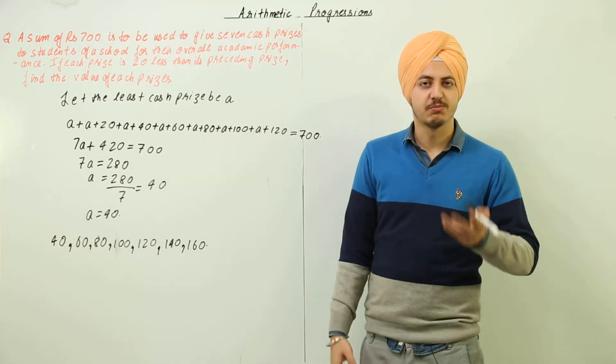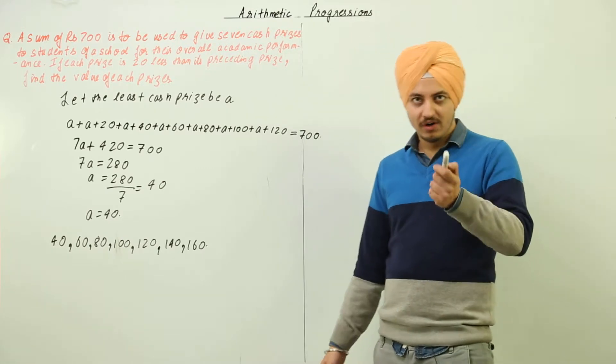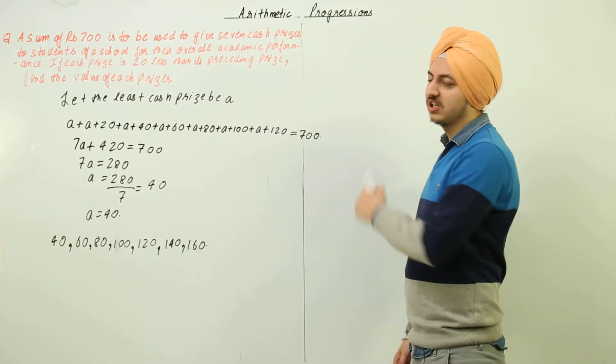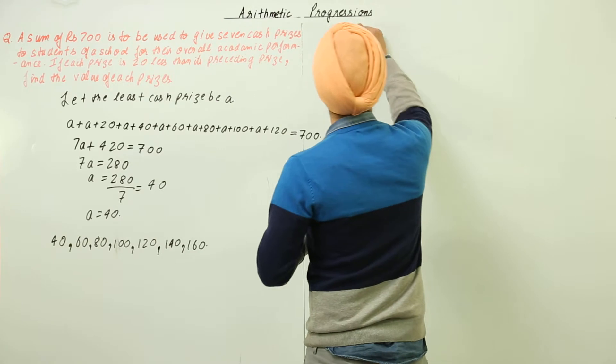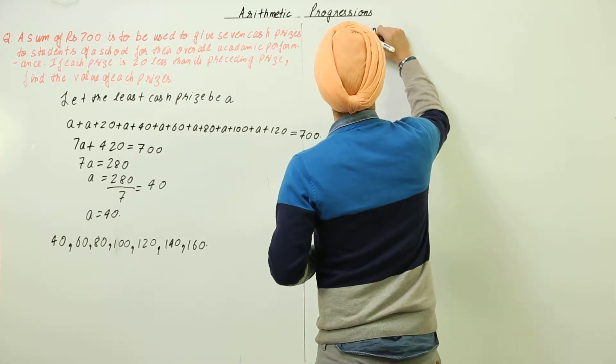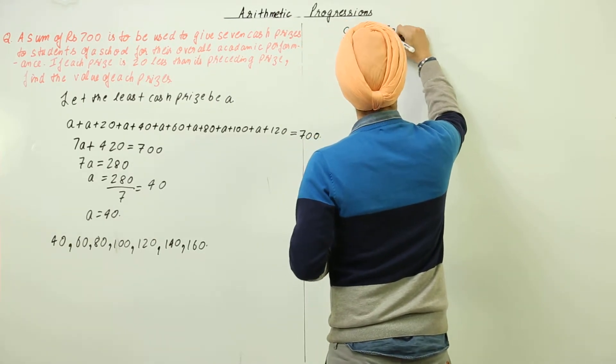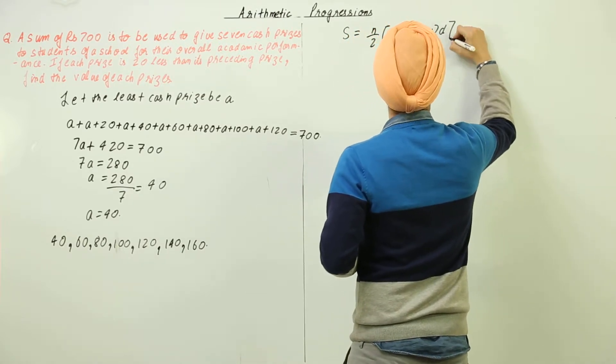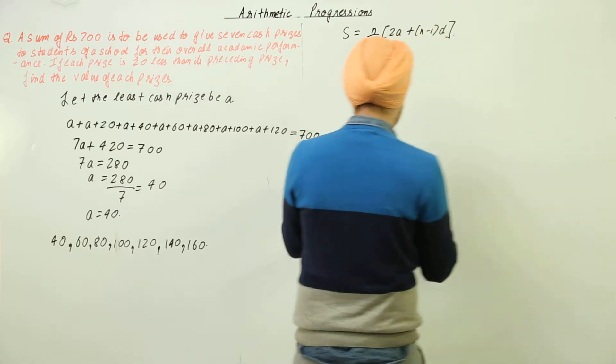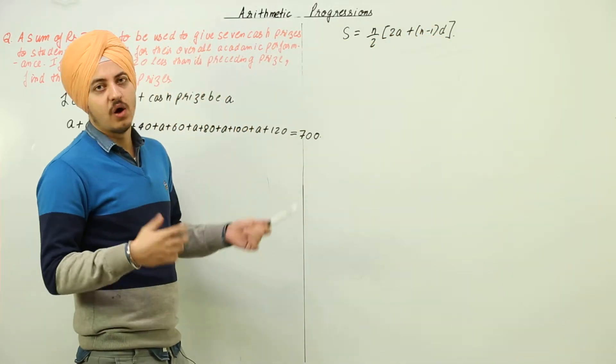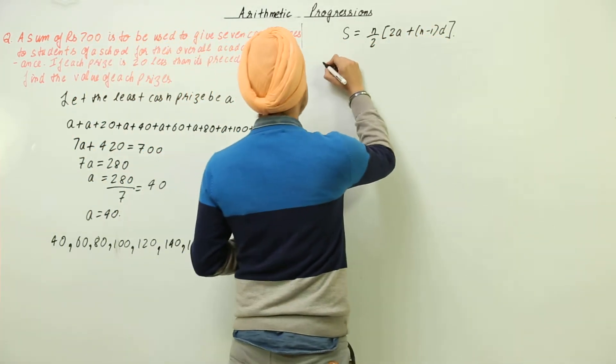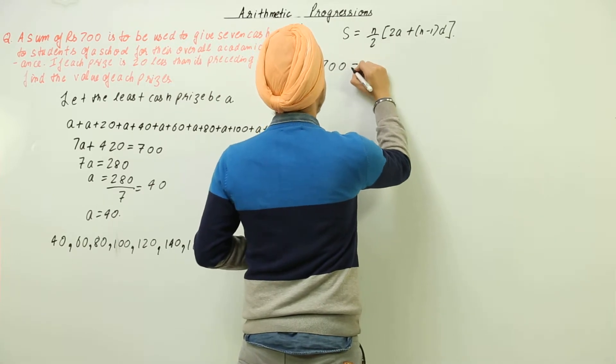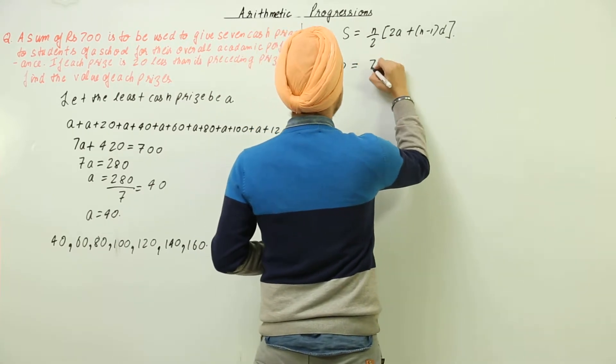Now if we are very desperate to use the sum of the formula for the sum of an AP, the formula says s is equal to n by 2 into 2a plus n minus 1 into d. Now it is very simple, we know the sum that is equal to 700, we know what is n, n is equal to 7.